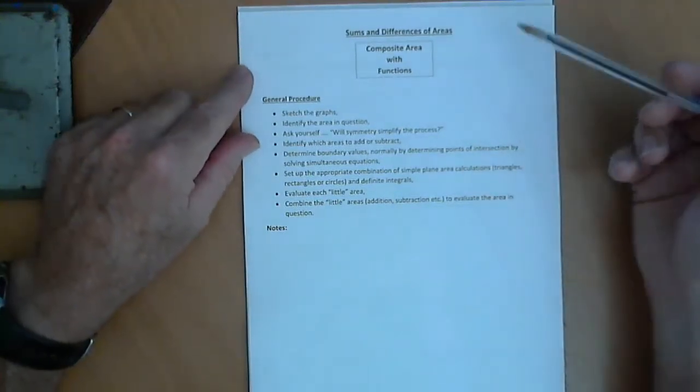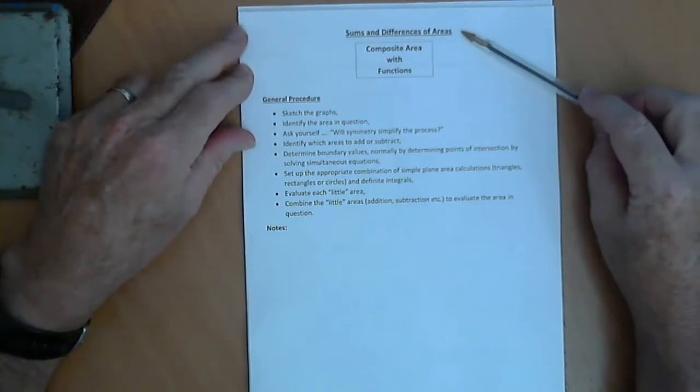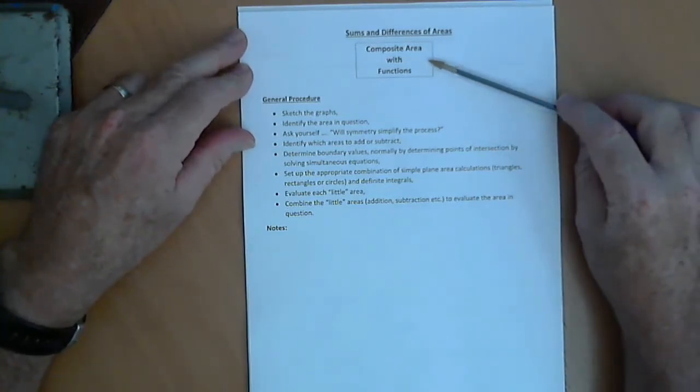Okay, so what we're about to do is go through sums and differences of areas, which I like to think of as composite area on the number plane.